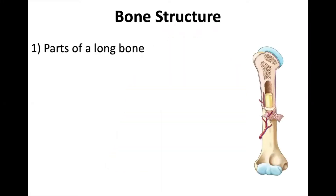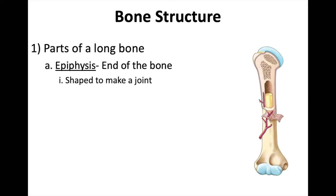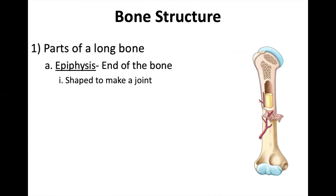Bone structure. We're going to start where we left off in the vocabulary and revisit the different parts of the bone. The epiphysis is the end of the bone. Notice that the arrow isn't touching any single part — it's this area, this section — because an epiphysis is not a physical thing, it is a location. This area of the bone.